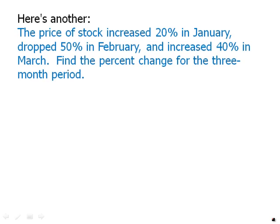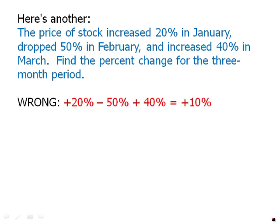The predictable mistake that more than half the people who take the test will make is to just add and subtract: plus 20, minus 50, plus 40, giving positive 10, so a 10% increase. That is the mistake people will make. The test writers absolutely love it when they can write a question with such a predictable mistake. That's why it's so important to understand the nature of this mistake so you don't fall into the trap.